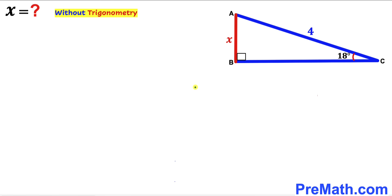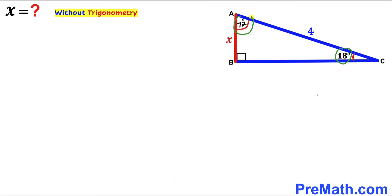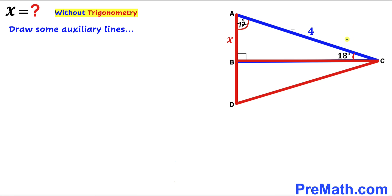We know this angle is 18 degrees and this is our 90-degree angle, so therefore this remaining angle has got to be 72 degrees, since the sum of all interior angles must add up to 180 degrees. We can observe that this angle is 18 degrees and this angle is 72 degrees, so the ratio is 1 to 4. We are now going to draw some auxiliary lines.